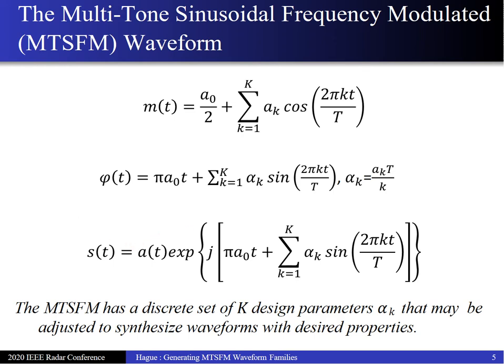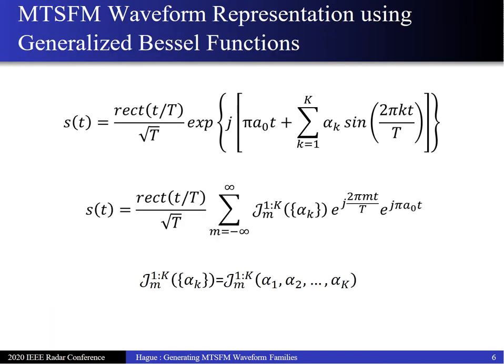This is a mathematically cumbersome expression, but there's a way to simplify it and get convenient analytical expressions for things like the spectrum and ambiguity function of this waveform, by utilizing generalized Bessel functions — generalized in that they accept a multi-dimensional argument. Invoking the Jacobi-Anger expansion for generalized Bessel functions gives a complex Fourier series representation for the multitone SFM, where the Fourier coefficients are given by the mth order generalized Bessel function with argument alphas of k — the modulation indices. With these, exact closed-form analytical expressions for the spectrum and ambiguity function of the multitone SFM can be derived, detailed in a paper submitted to IEEE Transactions on Aerospace and Electronic Systems.